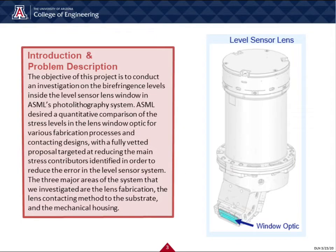We were tasked with conducting an investigation on the birefringence levels inside the level sensor lens window in ASML's photolithography system. They desired a quantitative comparison of the stress levels in the window optic for various manufacturing processes, with a fully vetted proposal targeted at reducing them. The lens window optic is an optical contact assembly inside the level sensor system, which plays a crucial role for the wafer height measurement at the nanometer scale. The current birefringence levels in the window are a major contributor to the sensor error, and significant amounts are due to three major manufacturing areas: the lens fabrication, the lens contacting, and the mechanical housing.